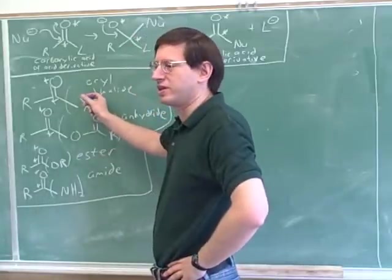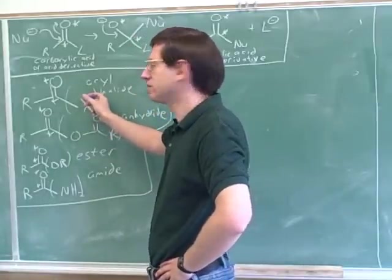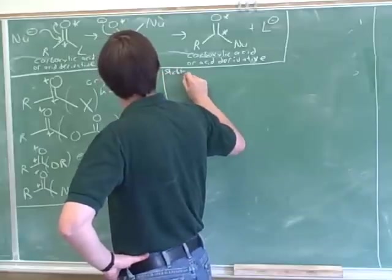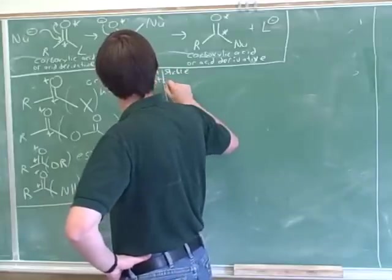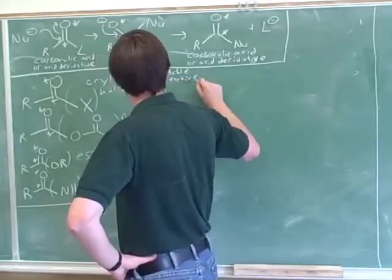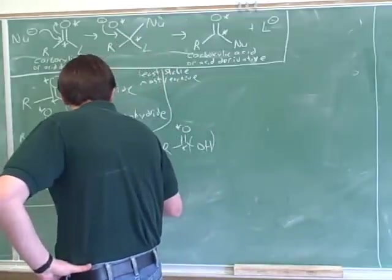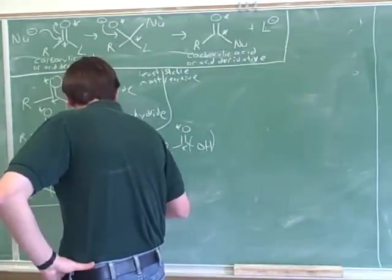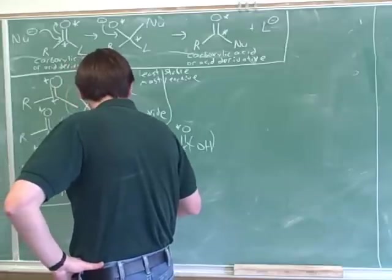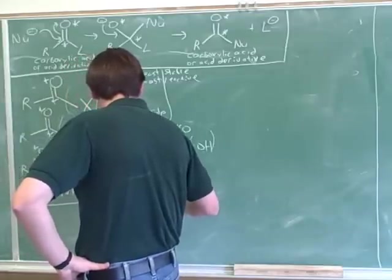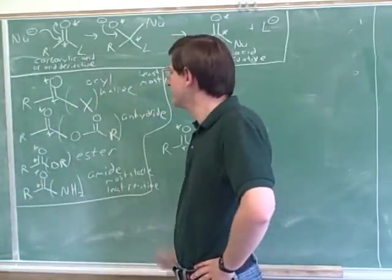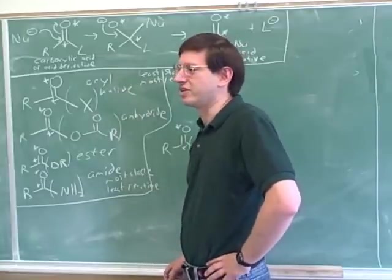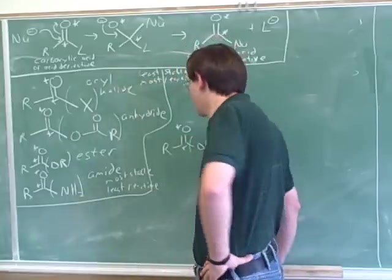Is this the happiest or the least happy? The least happy. Right. So this is the least stable and most reactive. And this is the most stable and least reactive. So is it easy to move up the table or down the table? Down. Yeah. It's like going downhill. It's easy to go downhill, but hard to go uphill.